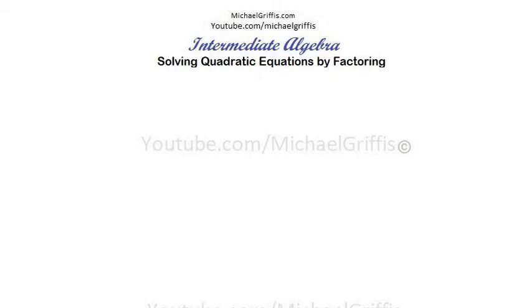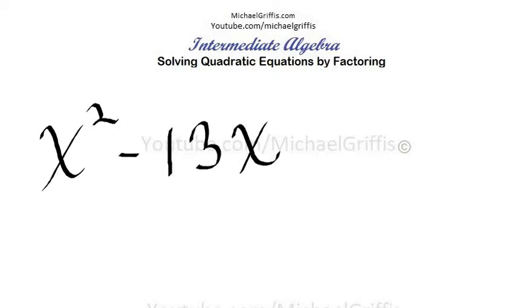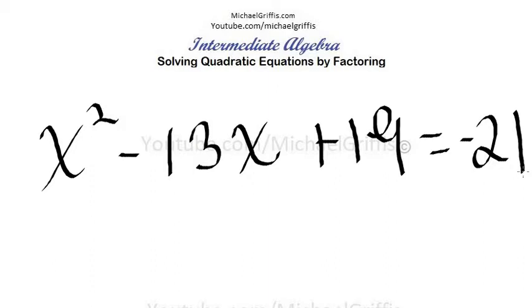Okay, I see it now. Say we're given x squared minus 13x plus 19 equals negative 21, and we're asked to find the solutions to this equation.